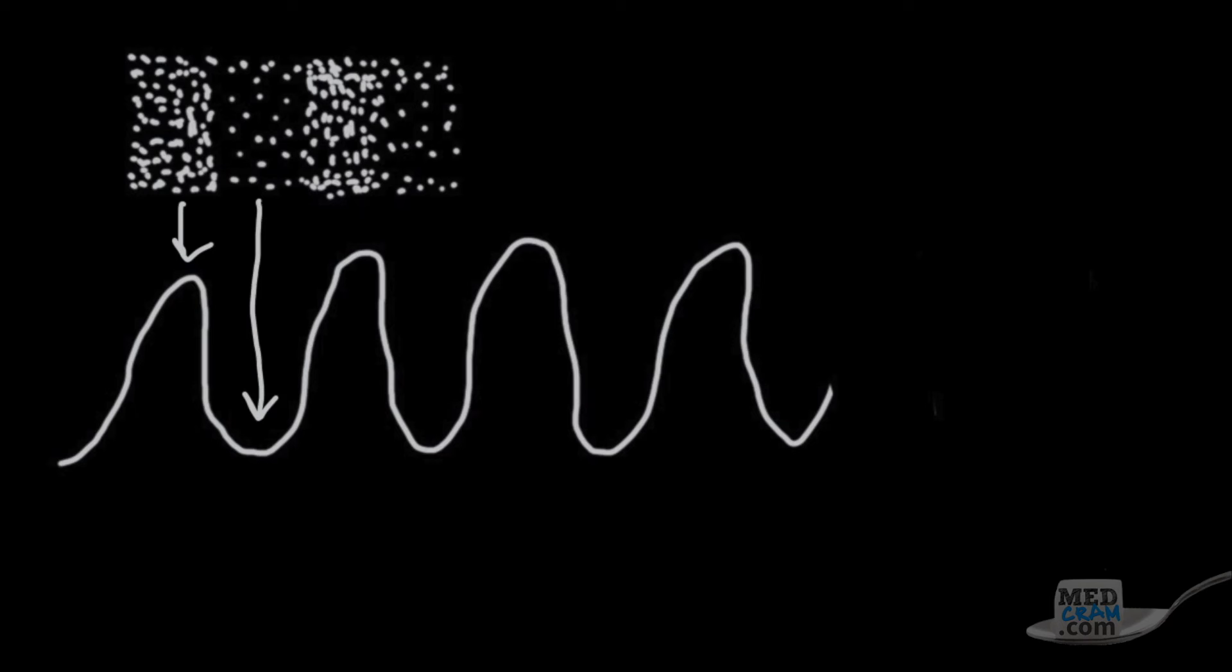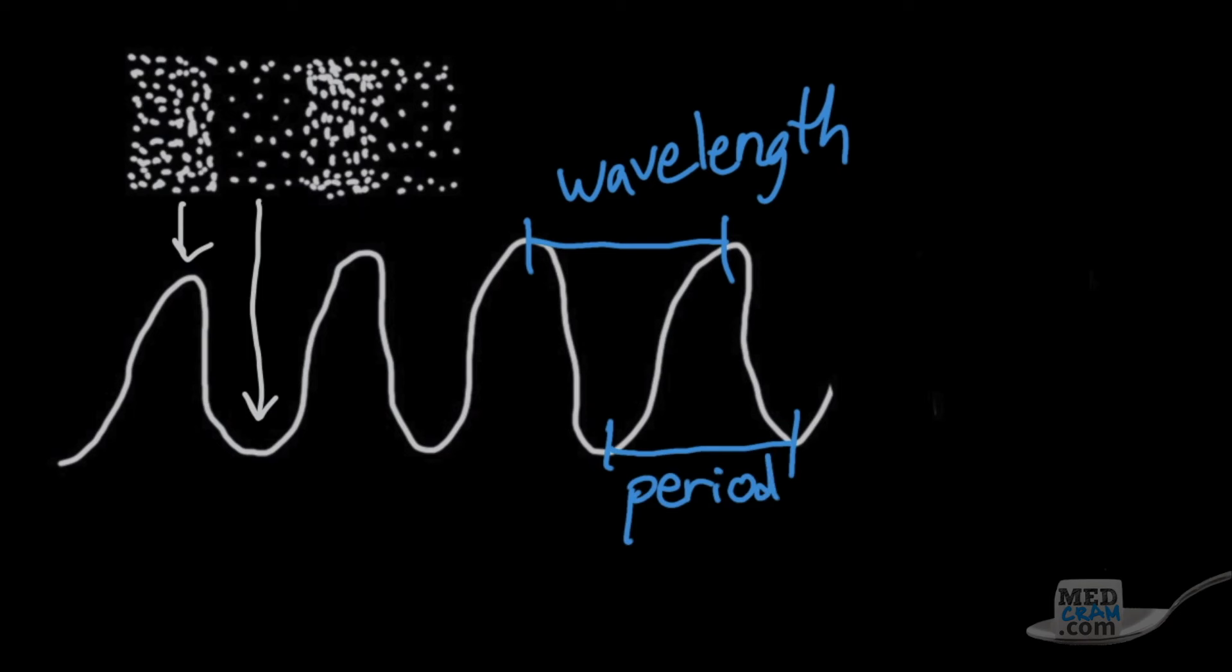The first characteristic of a sound wave we want to discuss is the wavelength. The wavelength is the distance between a peak and a peak, and a trough and a trough. And similarly, the time between a peak and a peak, and a trough and a trough is called a period. So wavelength is a function of distance, and period is a function of time.